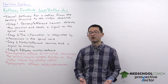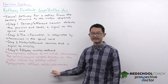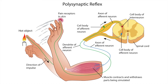Most reflexes, however, are polysynaptic, as you can see in this diagram. The sensory neuron detects a noxious stimulus and sends a signal to the spinal cord onto an interneuron. The interneuron then sends a signal to a motor neuron, which elicits the motor response. In this case there are two synapses — one from the sensory neuron to the interneuron, and another from the interneuron to the motor neuron — making this a polysynaptic reflex.